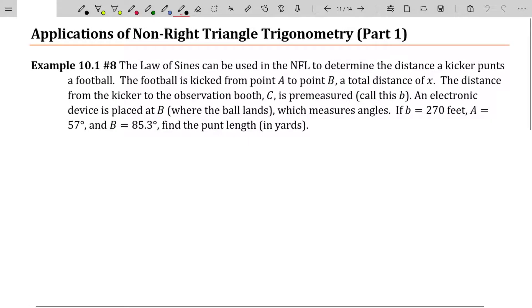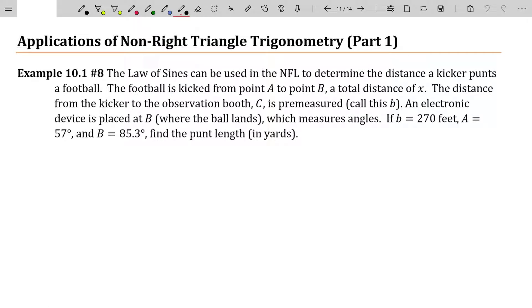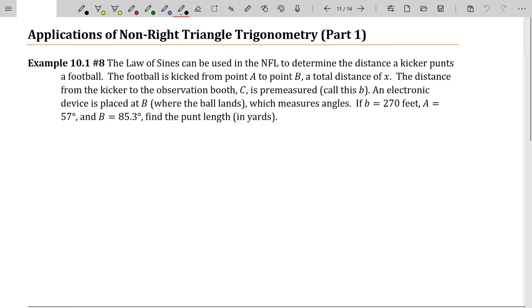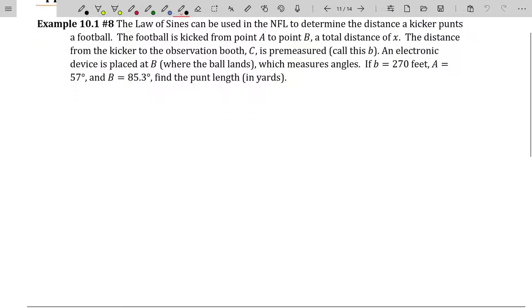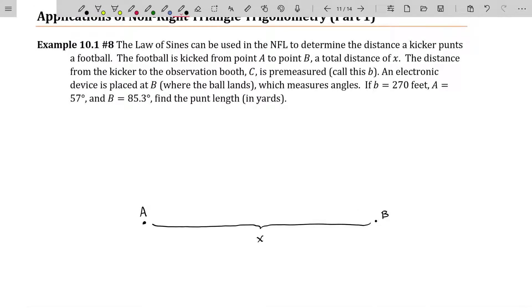The Law of Sines can be used in the NFL to determine the distance a kicker punts a football. The football is kicked from a point A to a point B, which is a total distance of X. So somebody kicks a ball from point A to point B, a total distance that we don't know, and we will just call X. The distance from the kicker to the observation booth. So remember, the kicker was right here at point A. There's some observation booth, C, and that distance we're going to call B.